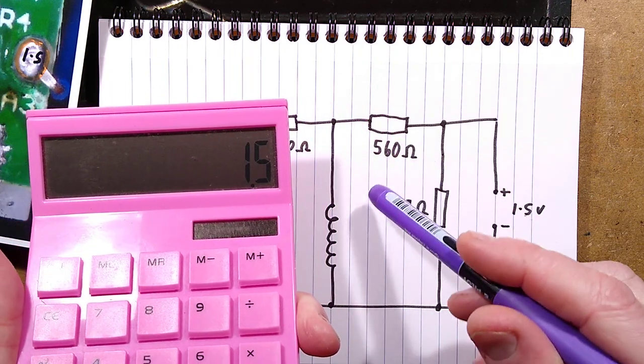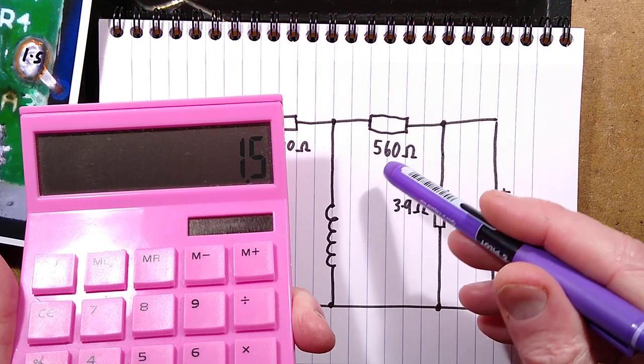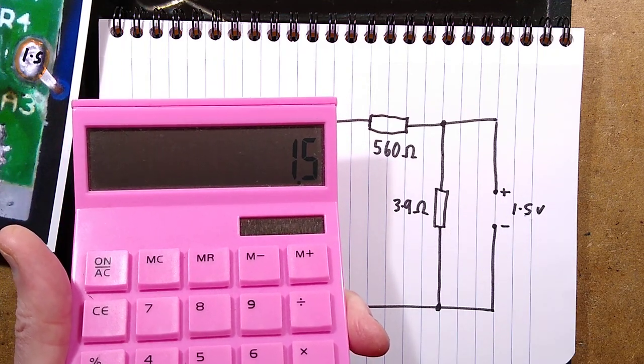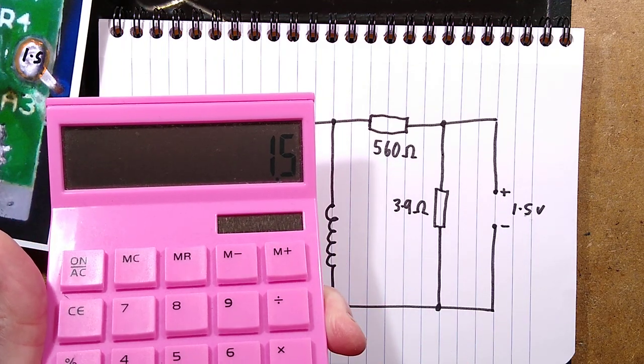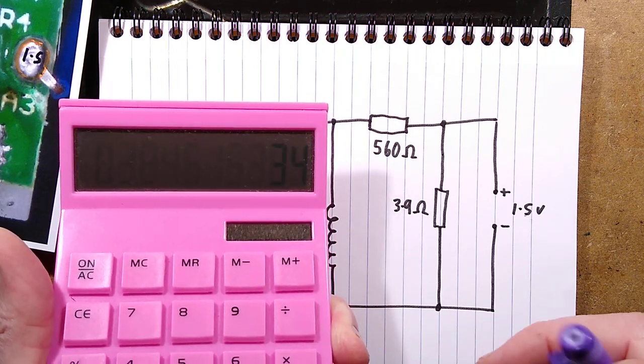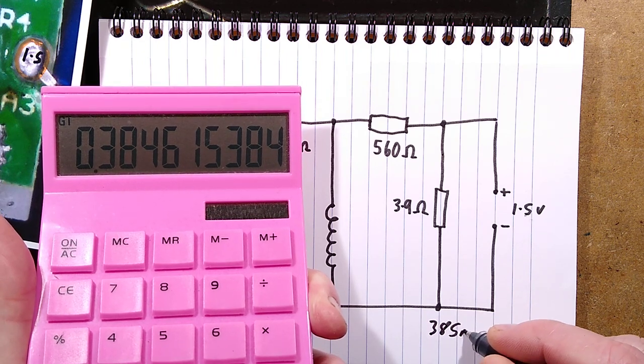With nickel metal hydride batteries, it will always show a lower voltage because the inherent voltage is lowered. It's measuring the voltage. So 1.5 for a fresh alkaline battery divided by 3.9 ohm. So it's going to test at more than 385 milliamps.